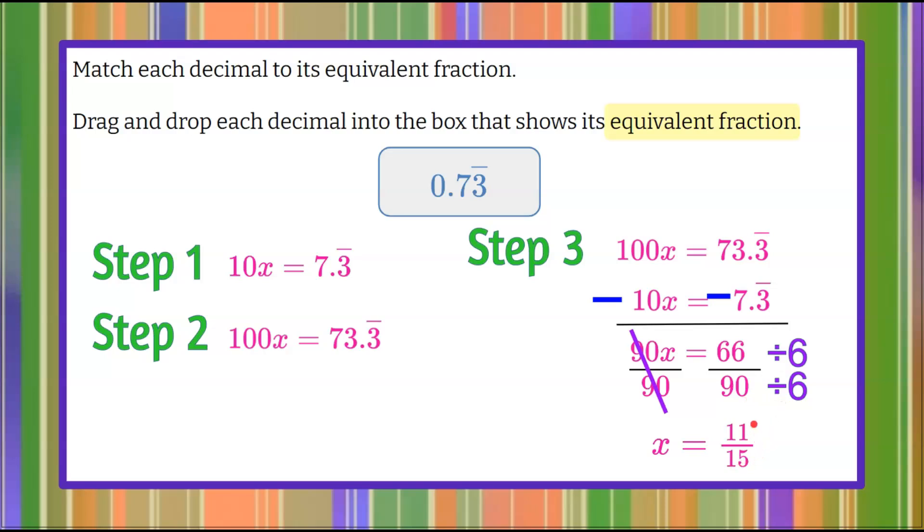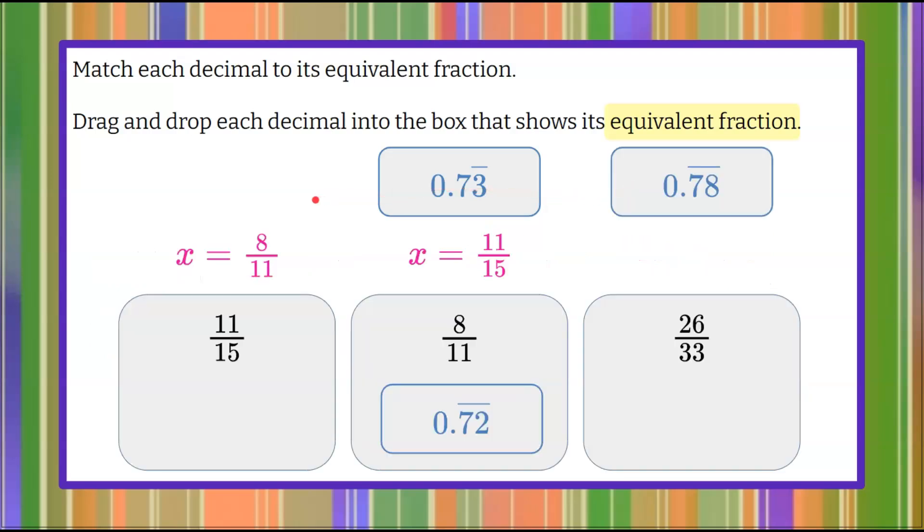So on a calculator, 11 divided by 15 would result in 0.733333 repeating. Here we go. Bring our work forward. So we have our 0.73 repeating is equivalent to 11/15. So let's drag and drop our decimal to our matching equivalent fraction.